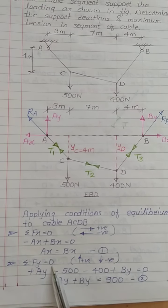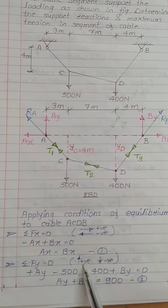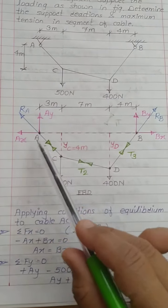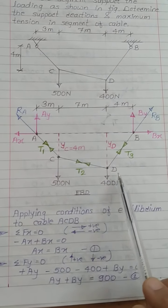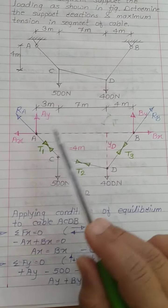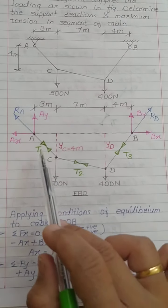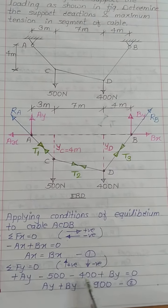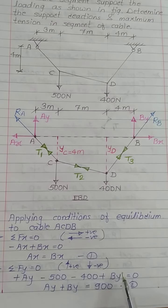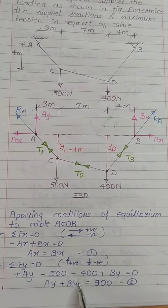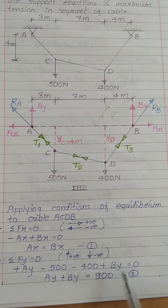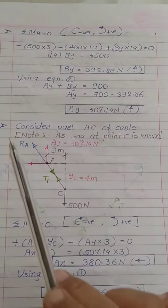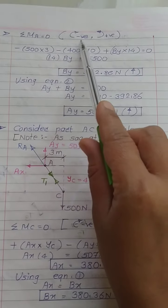Applying the second equilibrium condition ΣFy = 0, with vertically upward forces positive and downward forces negative. There are four forces acting in the vertical direction. According to sign convention: +Ay − 500 − 400 + By = 0, which gives Ay + By = 900 N. This is equation number two.